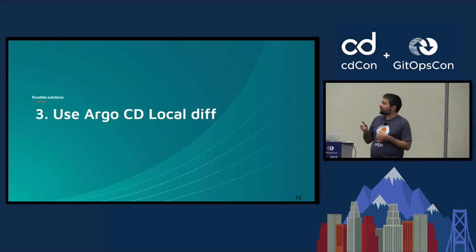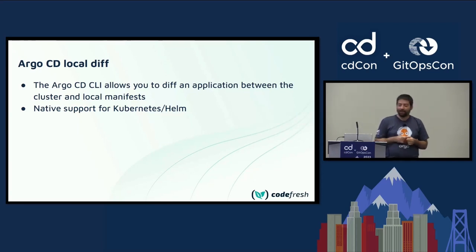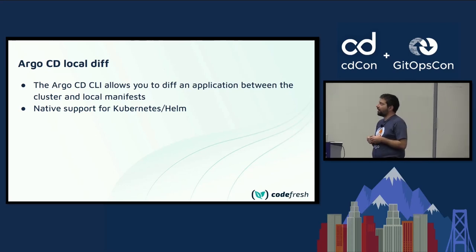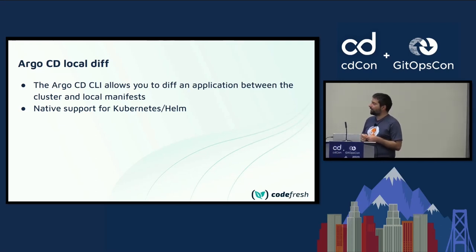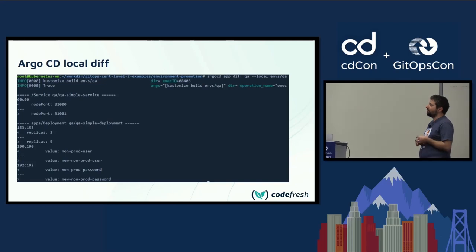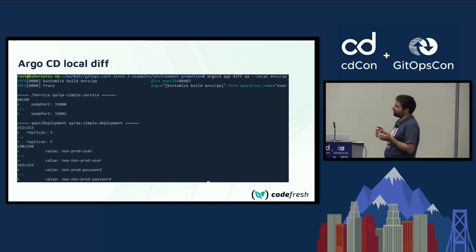The other thing you can do — and this is also a good question — how many people have used the diff command in the Argo CD CLI? How many have used the --local argument? There is a similar capability with the Argo CD CLI that allows you to diff the application — what is in the cluster against local manifests. It has full support for everything that Argo CD supports: if you're using Helm, it runs the templates; if you're using Kustomize, it applies the customizations. I run it here and see some changes. This is one of the features of Argo CD that is not publicized very well, but it's really important because you can diff against files that are on your laptop — not committed anywhere, not on a Git repo.